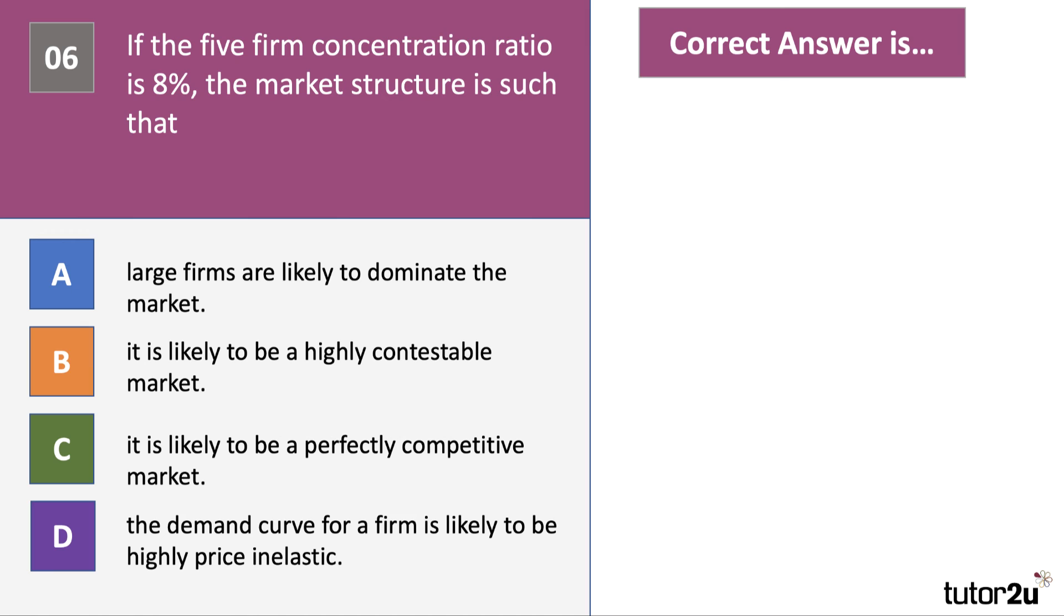And here's the final question. If the 5 firm concentration ratio is 8%, what is the likely market structure? If the 5 firm concentration ratio is 8%, the market structure is such that... What do we think for question 6?